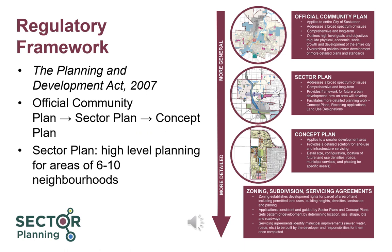Saskatchewan's Planning and Development Act 2007, the provincial legislation that governs how cities are planned, requires that Sector plans and any amendments to them include public engagement and receive final approval from City Council. The City's Official Community Plan, or OCP, helps lay out the framework to make Saskatoon a liveable and thriving community. The OCP provides direction for Sector plans and concept plans throughout the City. A Sector is typically comprised of areas that will eventually become six to ten neighbourhoods. A Sector plan provides high-level planning direction and identifies requirements for the concept plans that will eventually be created within the sector.